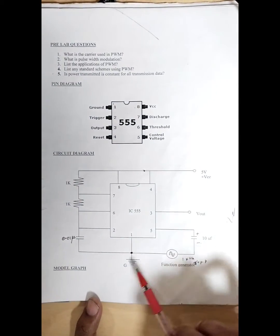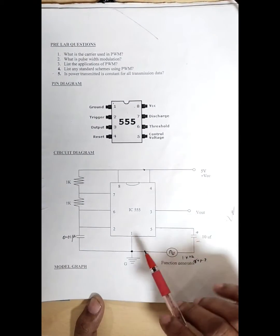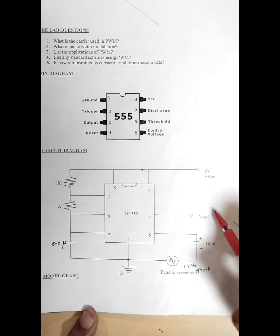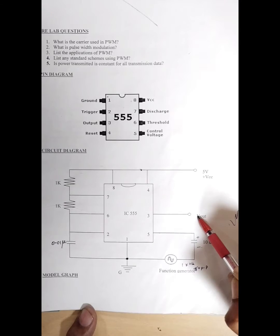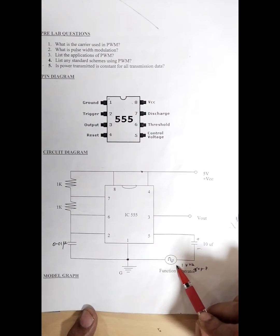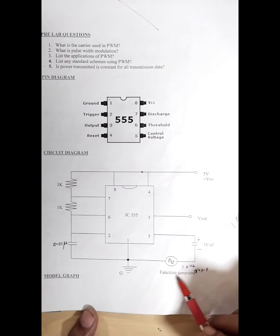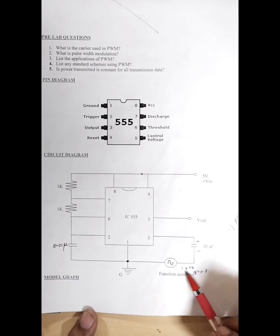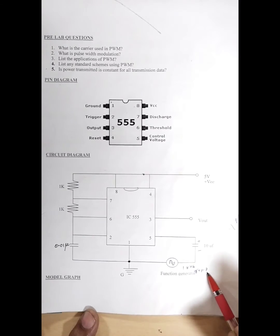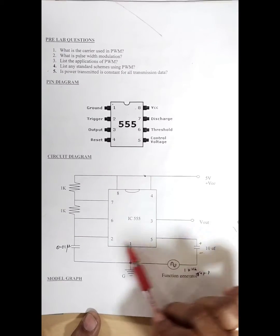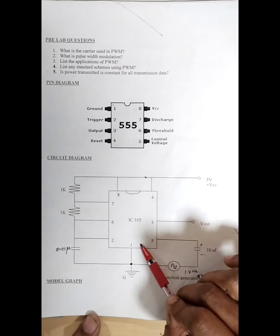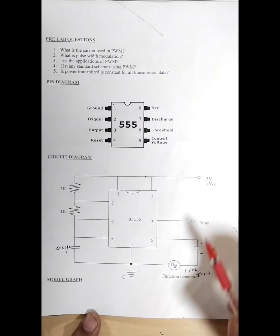The experiment is pulse width modulation. In pulse width modulation, we are going to use a 555 timer to generate a pulse. The width of the pulse is going to be changed based on the amplitude of the message signal or the modulating signal. The modulating signal is fed from a function generator whose frequency is set as one kilohertz and five volts peak to peak. The 555 timer is going to be operated in astable mode to generate a square wave.